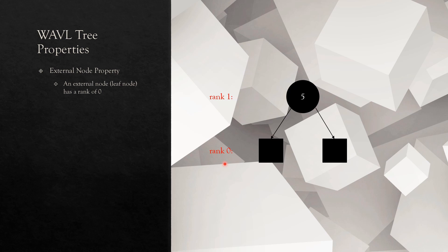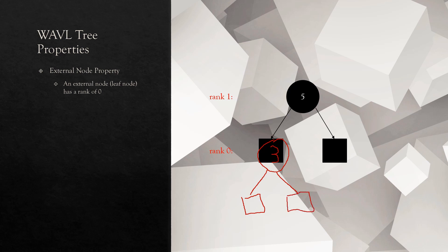These external nodes are actually dummy nodes — they don't have any value, key, or data associated with them. The reason we have them is for future insertions of other nodes; we basically take an external node and turn it into an internal node. For example, if I wanted to insert a node with a key of three into a tree whose root is five, I would take the external node to the left, since three is less than five, and put data into it to create the node of three. From there, I would branch off into creating two new external nodes for future insertions, and the rank will be updated according to the Waffle Tree insertion rules.